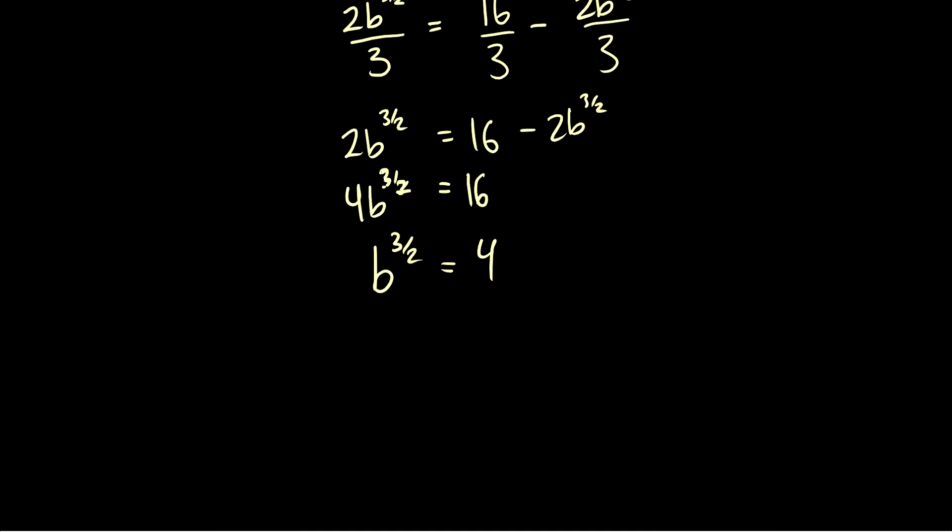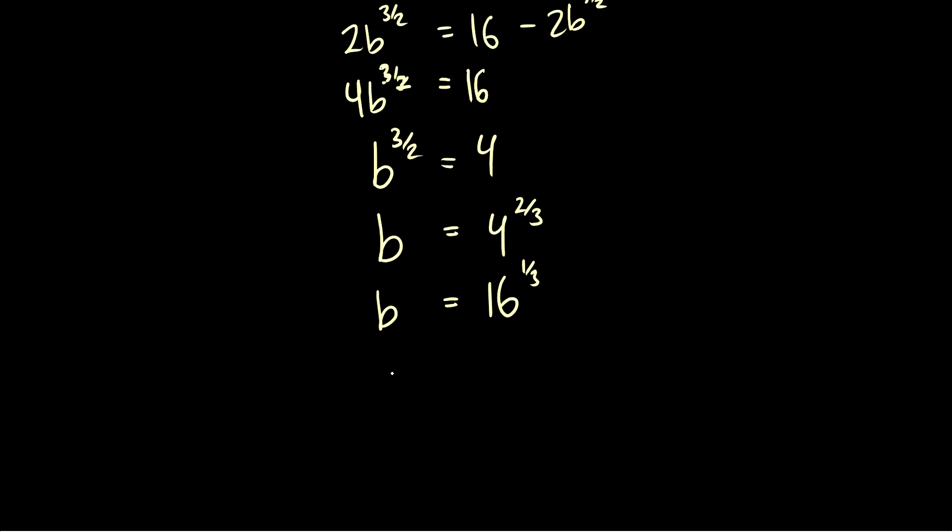Okay so now we can take both sides to the 2 thirds. So we get b is equal to 4 to the 2 thirds which is just the same thing as b is equal to, what's 4 squared, so that's 16 to the 1 third. So what is the cubed root of 16? Well that is some number that we're not entirely sure of. So we can say that b is equal to the cubed root of 16.